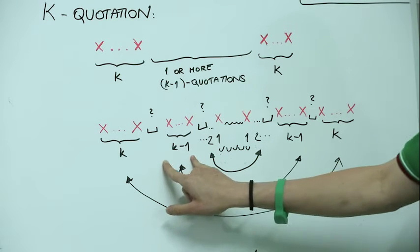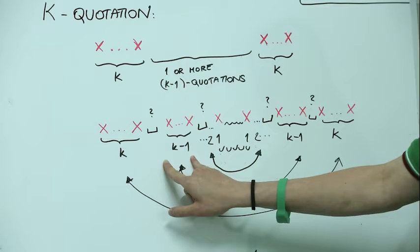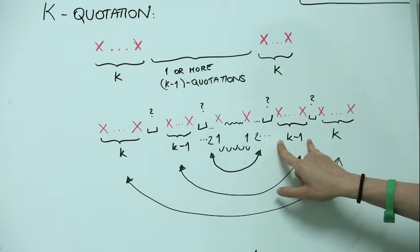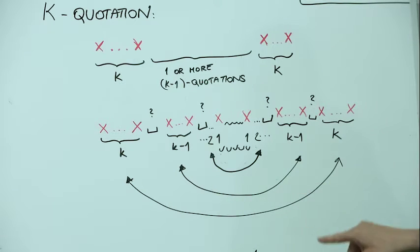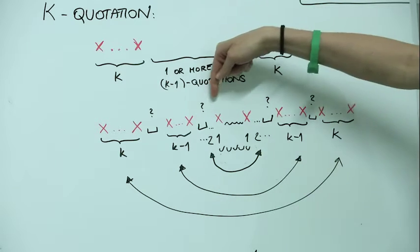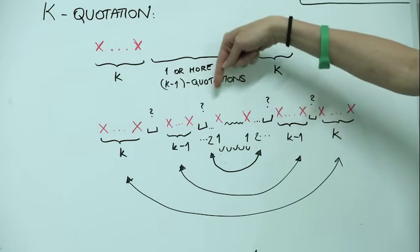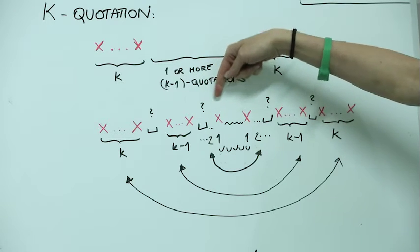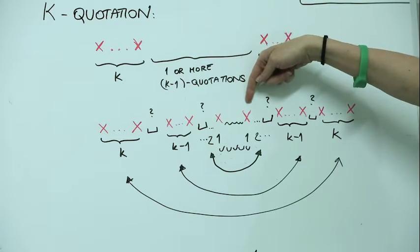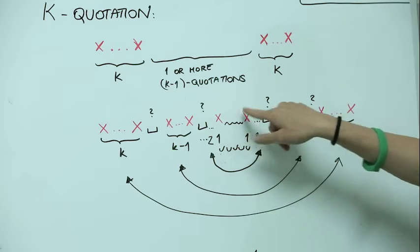From the definition, the k-1 quotation again has to start with k-1 quotes and end with k-1 quotes. In the same way, we have to have k-2 quotes, k-3 quotes, and so on. Then there will be one quote here and one quote here, and then possibly some quotes in between.